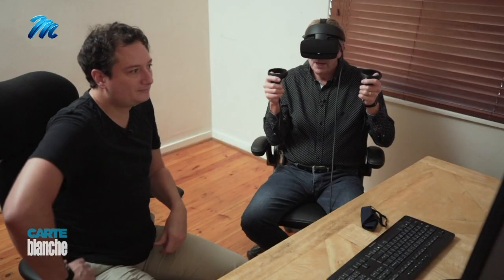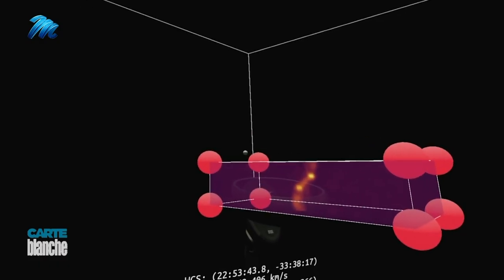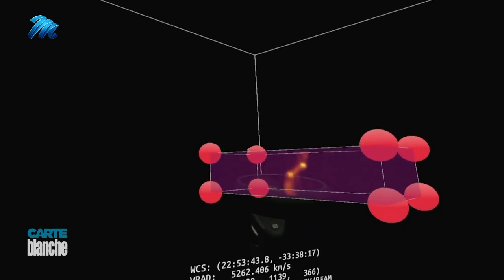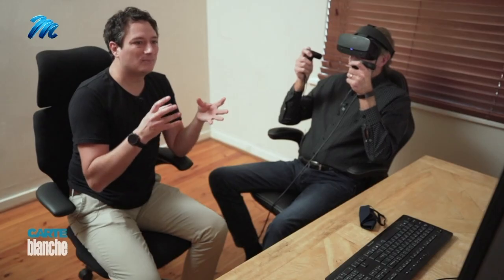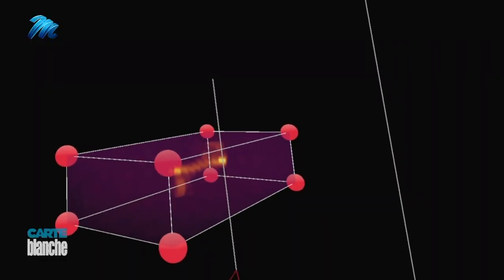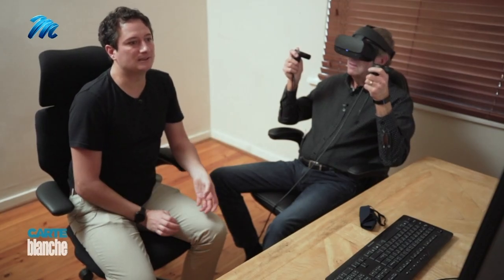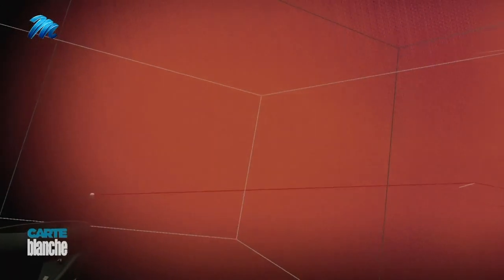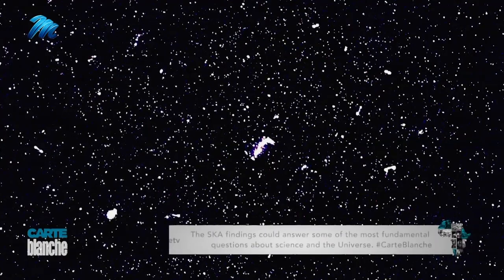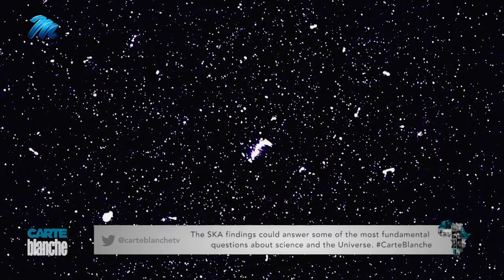Jeez, this is incredible. Right, so now what you're seeing is actual Meerkat data of a radio galaxy. Each of those blocks represents a data point that's been measured with Meerkat, and in this case what you're looking at here is the inside of a galaxy. So you've now stuck your head inside. And if these are the things that Meerkat is discovering, one can only imagine what the SKA will reveal.